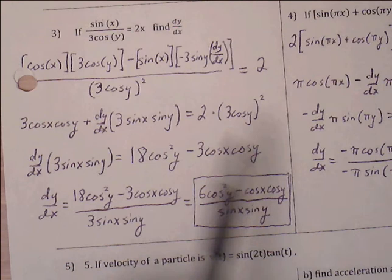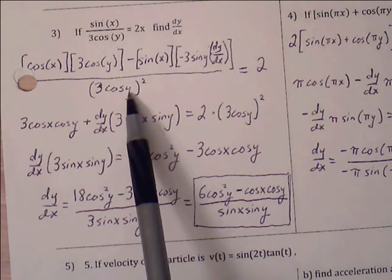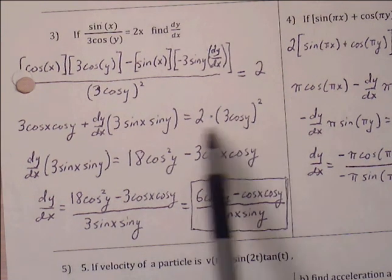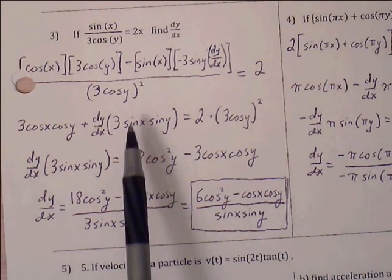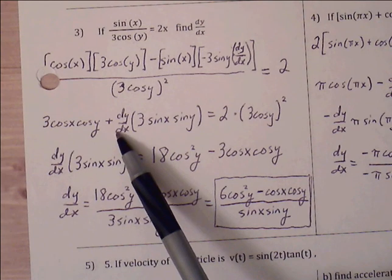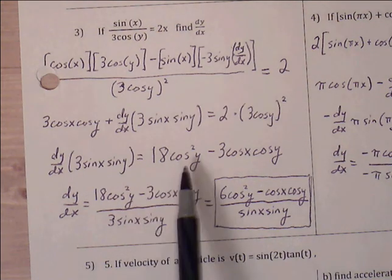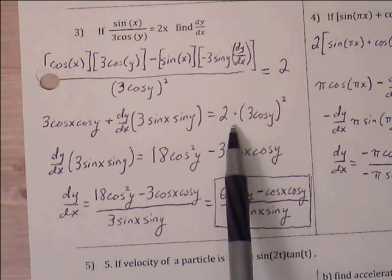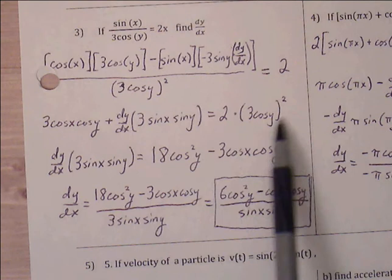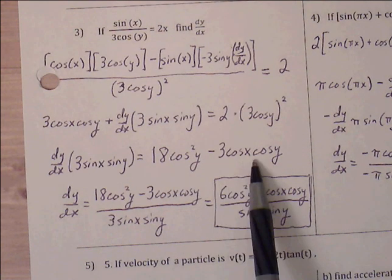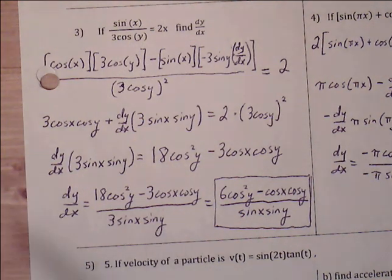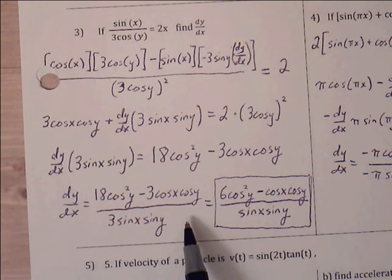The right side 2x simply becomes 2. Multiplying both sides by 3 cosine(y) squared to eliminate the denominator, the only dy/dx is attached to the 3 sine(x) sine(y) term. Subtracting 3 cosine(x) cosine(y) from both sides, the right side becomes 18 cosine squared(y) minus 3 cosine(x) cosine(y). Dividing all by 3 sine(y) gives our final derivative using implicit differentiation.